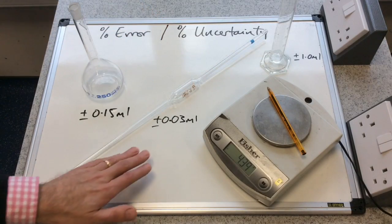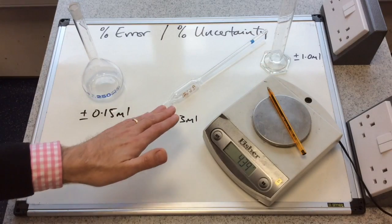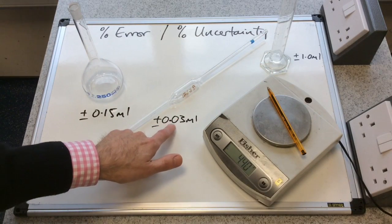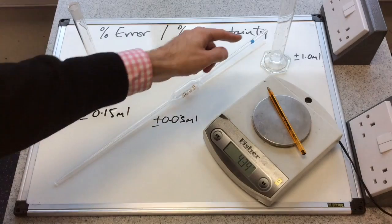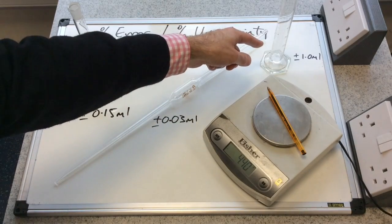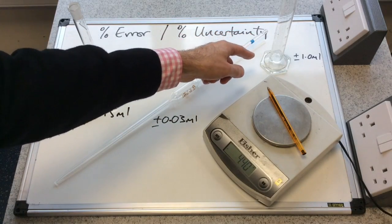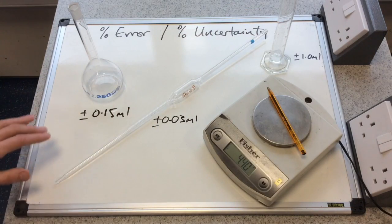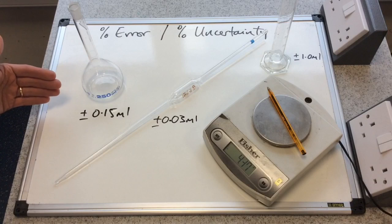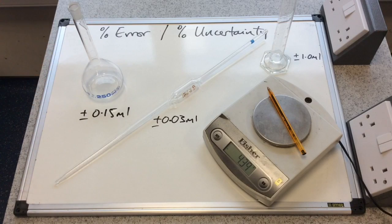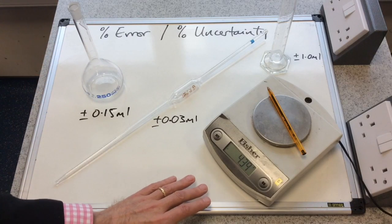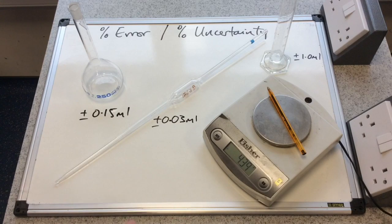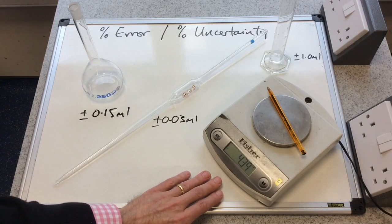So I've had a quick look at the other two pieces of apparatus here and found out that the pipette is saying plus or minus 0.03 milliliters and the measuring cylinder plus or minus 1.0 milliliters. So these three pieces of apparatus have actually got the uncertainty marked on to the equipment. The balance, on the other hand, doesn't.